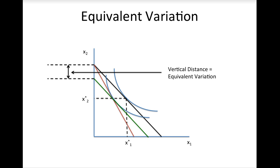Note that it has the same slope as the original budget line. The vertical distance between the green and black budget lines is the equivalent variation. Note that since we are taking money away in this case, the equivalent variation is negative. A negative equivalent variation tells you that the price change would make the consumer worse off.